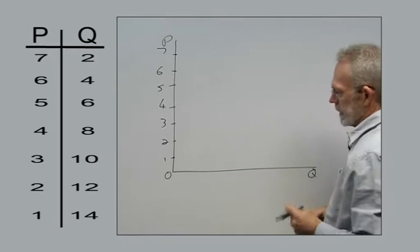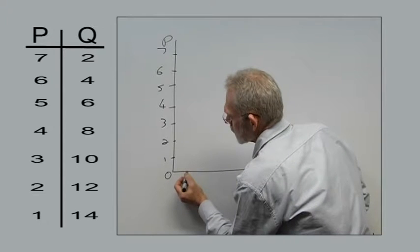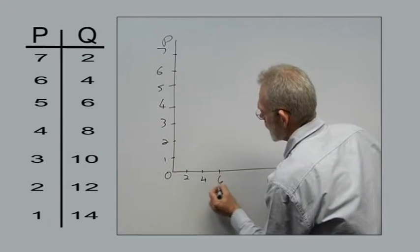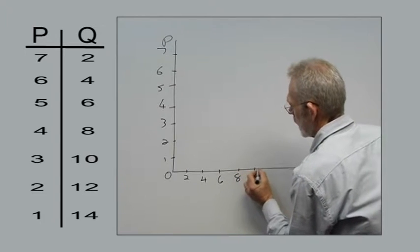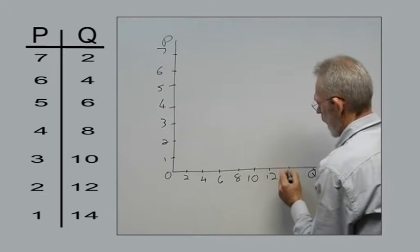And on the horizontal axis, we have the quantity values. 2, 4, 6, 8, 10, 12, and lastly we have 14.